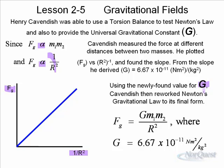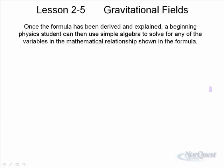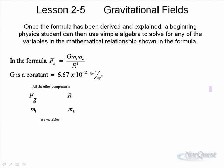One thing to remember: R is the distance between the centers of the two masses. When we calculate the gravitational force of attraction the Earth has on you, we go from the center of the Earth to the center of you. Even though you're touching the Earth, you're still quite a distance from the center of the Earth. Once the formula has been derived, a student can use simple algebraic tools to solve for any one of these variables.